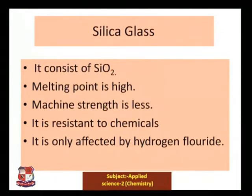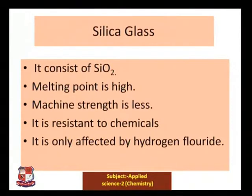Silica glass consists of SiO₂ in its structure. The melting point of this glass is very high, mechanical strength is less, and it is resistant to chemicals. It is only affected by hydrogen fluoride.